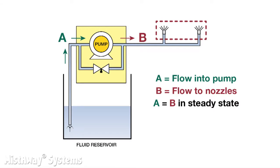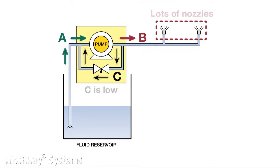Now let's look at C. C represents the flow of fluid through what is called an internal bypass in the pump. This type of pump always pushes the same amount of fluid, no matter how many nozzles are in the nozzle circuit. Whatever flow doesn't exit through the nozzles gets recirculated in the bypass. So if there are a lot of nozzles in the circuit, and B, the flow out to the nozzles, is high, then the flow through the bypass is low. If there are fewer nozzles, and B is low, then the flow through the bypass is high.